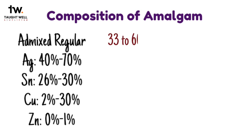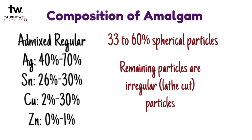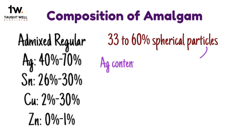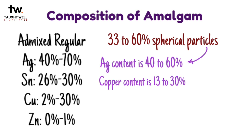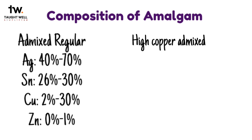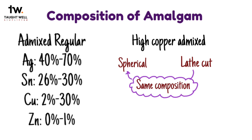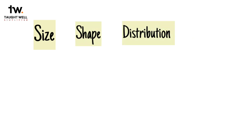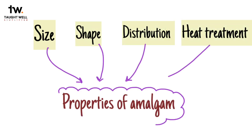The admixed regular alloy contains 33 to 60% spherical particles that have a composition close to the eutectic composition of silver-copper; the balance is irregular particles. The silver content of the unicompositional spherical alloys varies from 40% to 60%, the copper content varies from 13% to 30%, and tin content varies from 22% to 30%. A high copper admixed alloy is also available in which both spherical and irregular particles have the same composition and the copper content is between 29 and 30%. Admixed alloys are overall more popular than spherical alloys. In general, alloy composition, particle size, shape and distribution, and heat treatment control the characteristic properties of the amalgam.